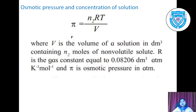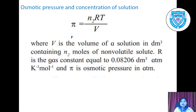The osmotic pressure formula is: pi = n2·R·T / V, where V is the volume of solution in dm³ containing n2 moles of non-volatile solute. R is the gas constant equal to 0.08206 dm³·atm per Kelvin per mole, and pi is osmotic pressure in atmospheres.